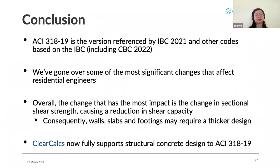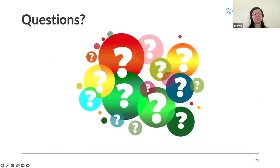So in conclusion, ACI 318-19 is now the version referenced by IBC 2021 and other codes based on the IBC. We've gone over some of the most significant changes that affect residential engineers. I'm happy to hear your thoughts on it. Overall, the change that has the most impact is the change in sectional shear strength, causing a reduction in shear capacity. And consequently, this means that walls, slabs, and footings may require a bigger or wider design. We're happy to announce that ClearCalcs now fully supports concrete design to ACI 318-19. Any questions?